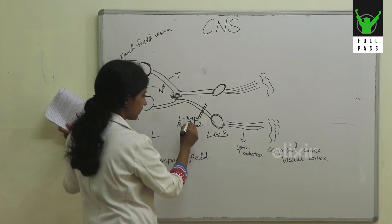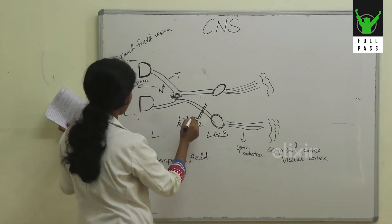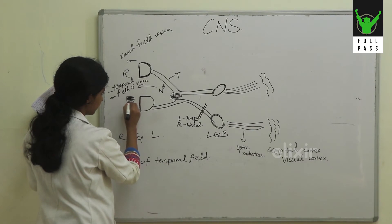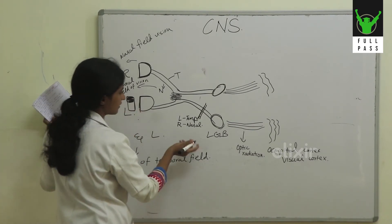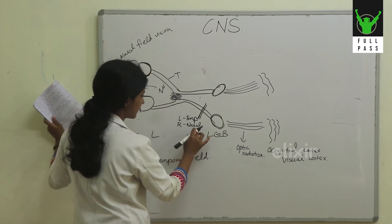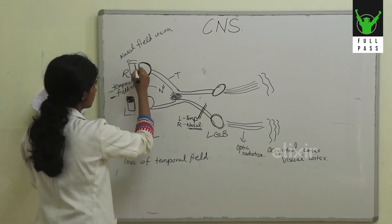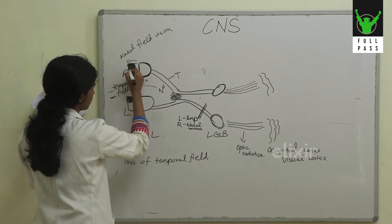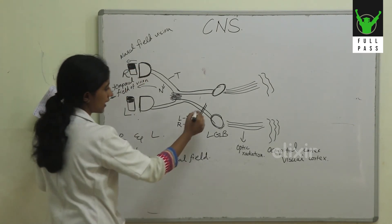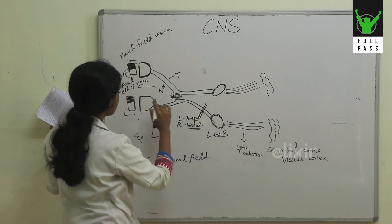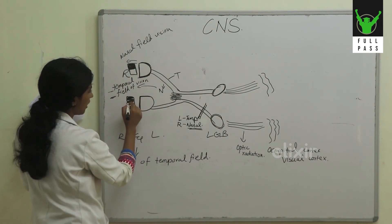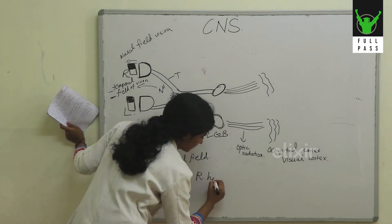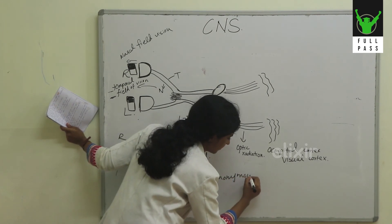So the field of vision lost is the nasal field of vision of the left eye, and on the right eye, since the nasal fibres are getting affected, the temporal field of vision of the right eye is lost. When you have a lesion in the left optic tract, you have a loss of vision on the right half of each eye — that is, you get a right homonymous hemianopia.